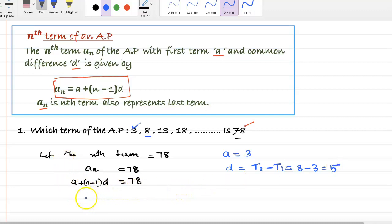Let us substitute. So a is 3, 3 plus (n minus 1) into d, which is 5, equals 78.